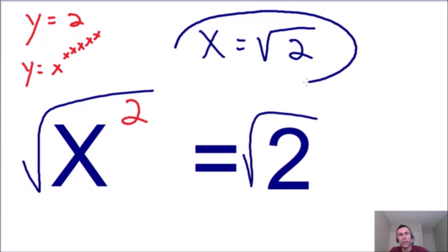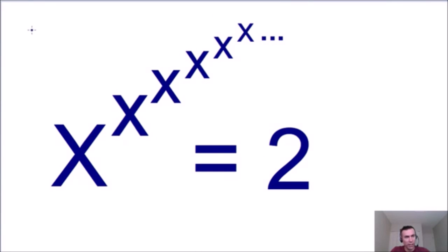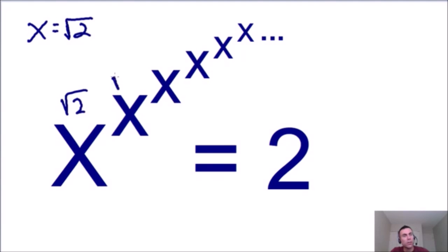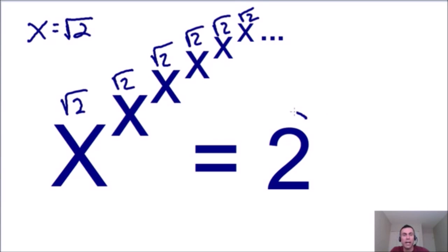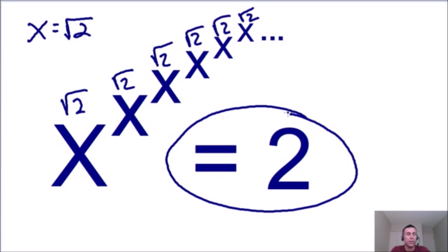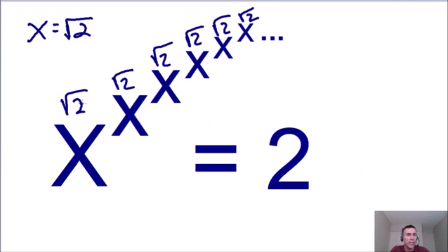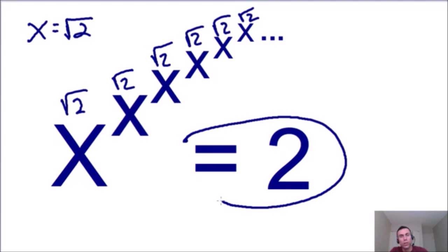So x equals the square root of 2 is the solution to our infinite exponent tower. I encourage you to go back and check it for yourself. If you plug in the square root of 2 for every x in the tower, the more times you plug it in, the closer you'll get to 2. If you do it an infinite number of times, it actually converges and equals exactly 2. Try it on your calculator — plug in the square root of 2 as many times as possible as exponents and watch it converge to 2.